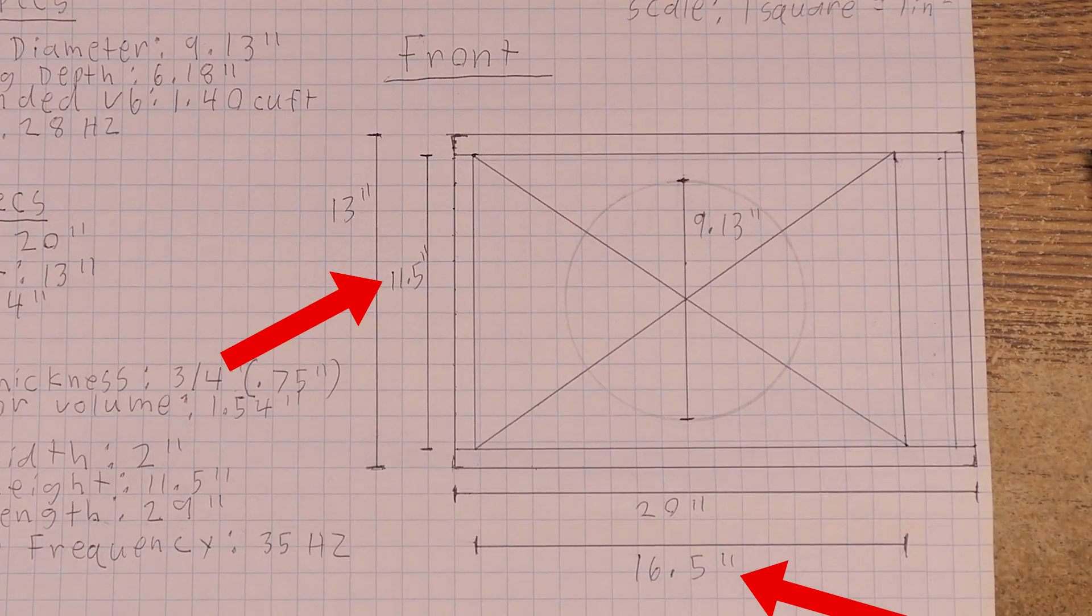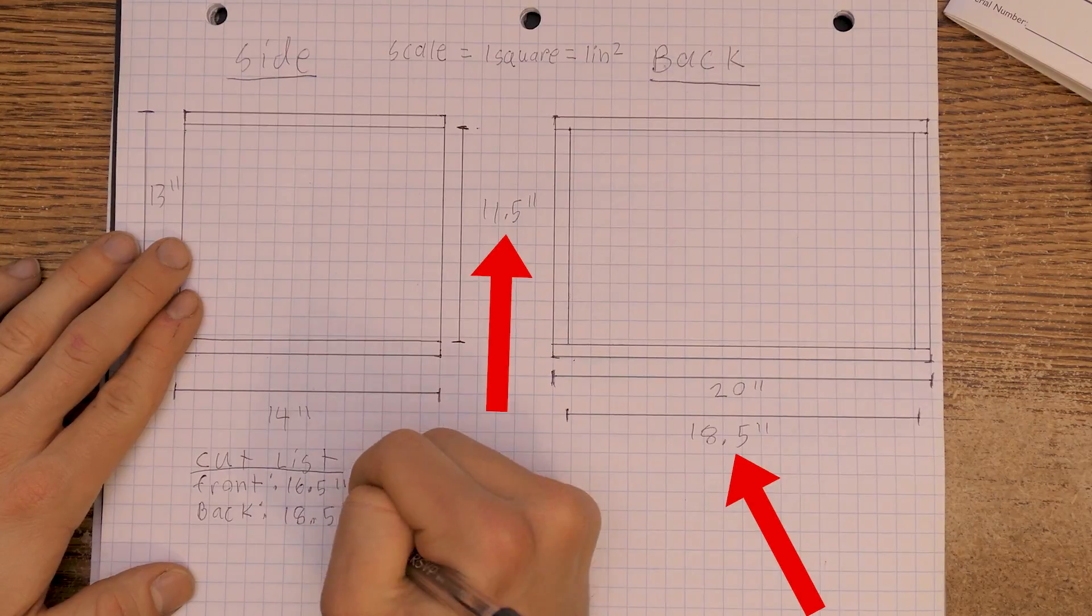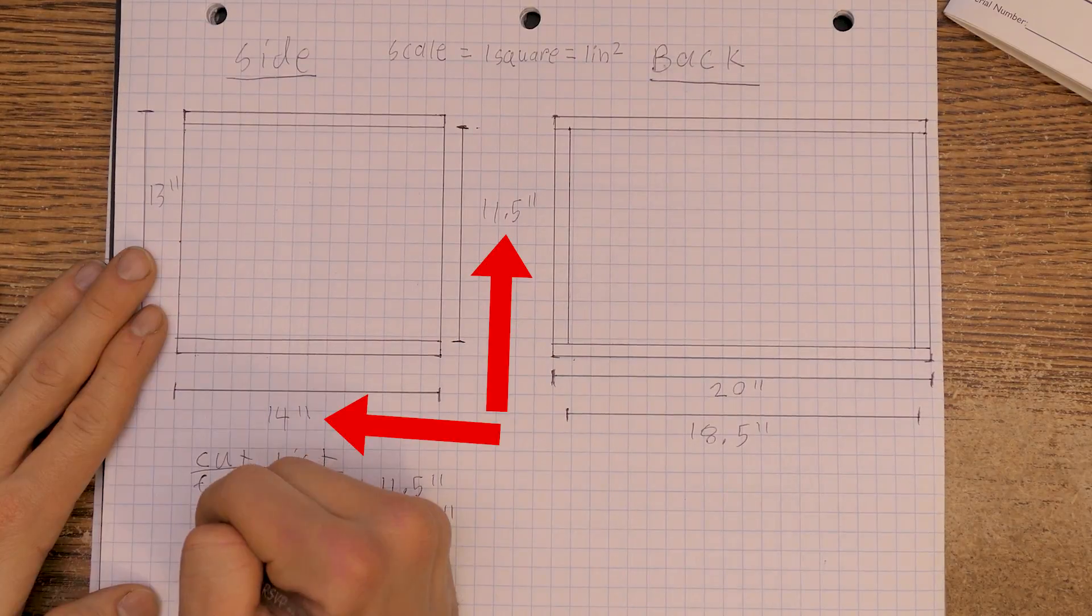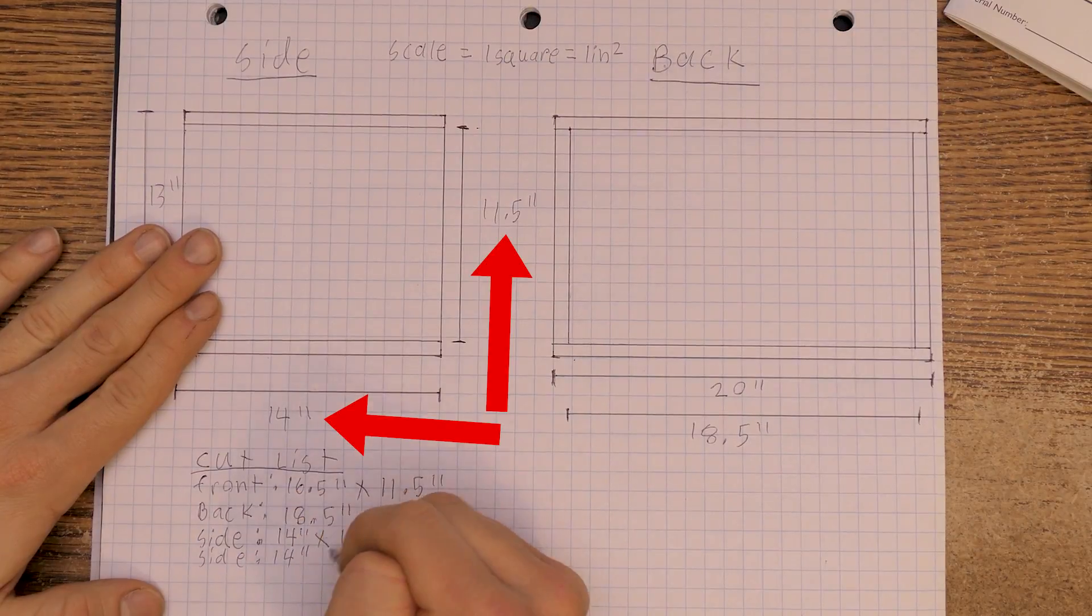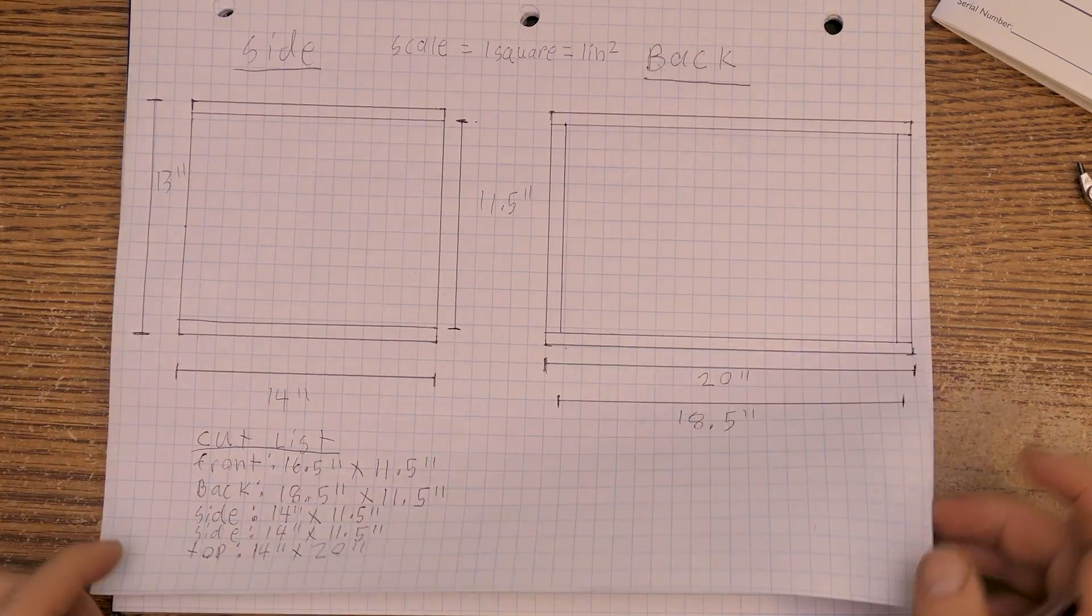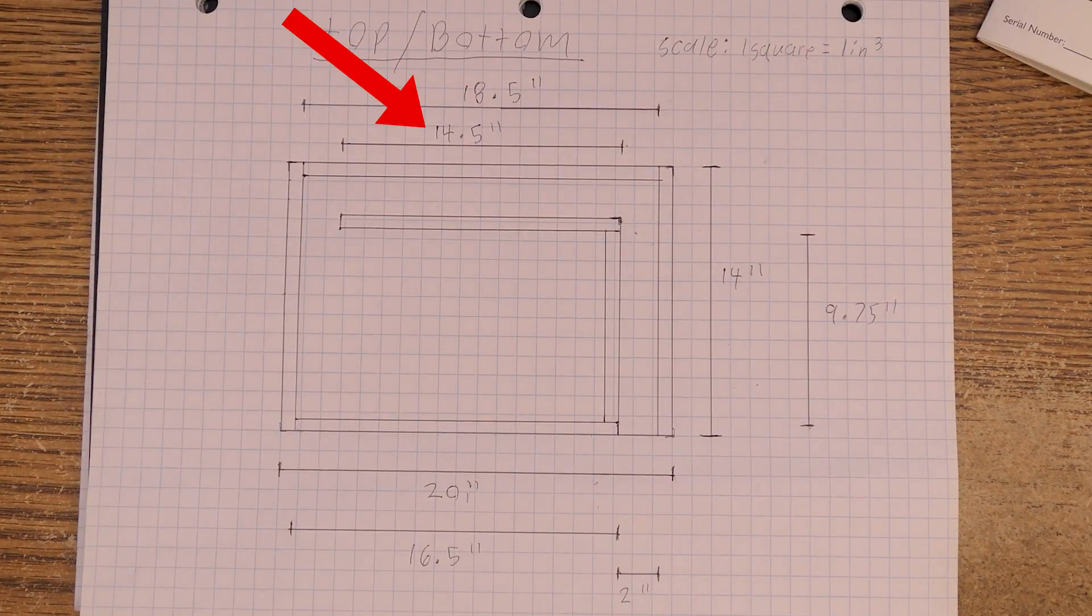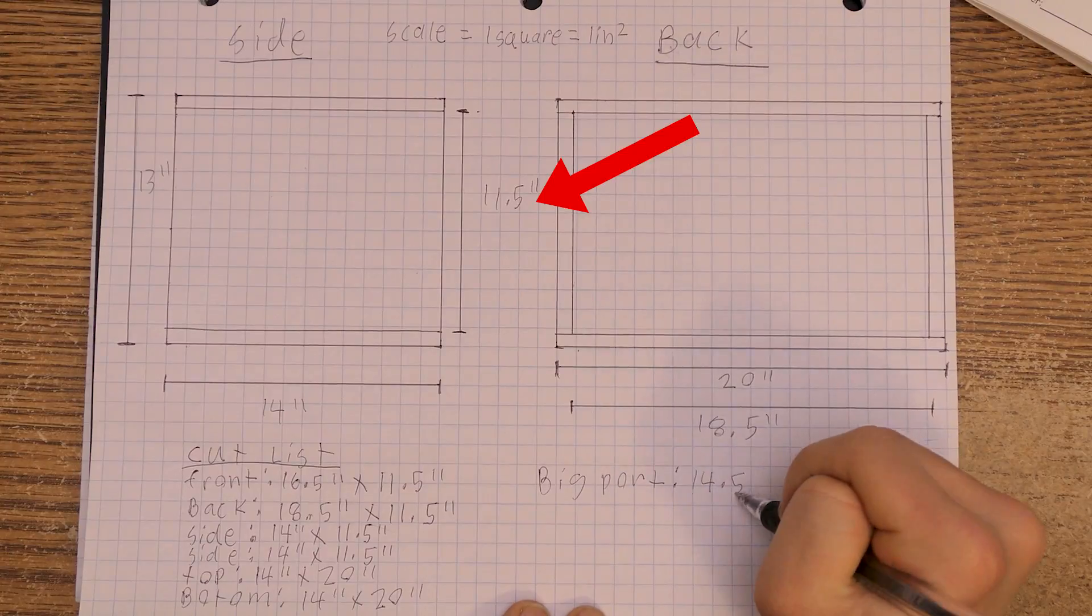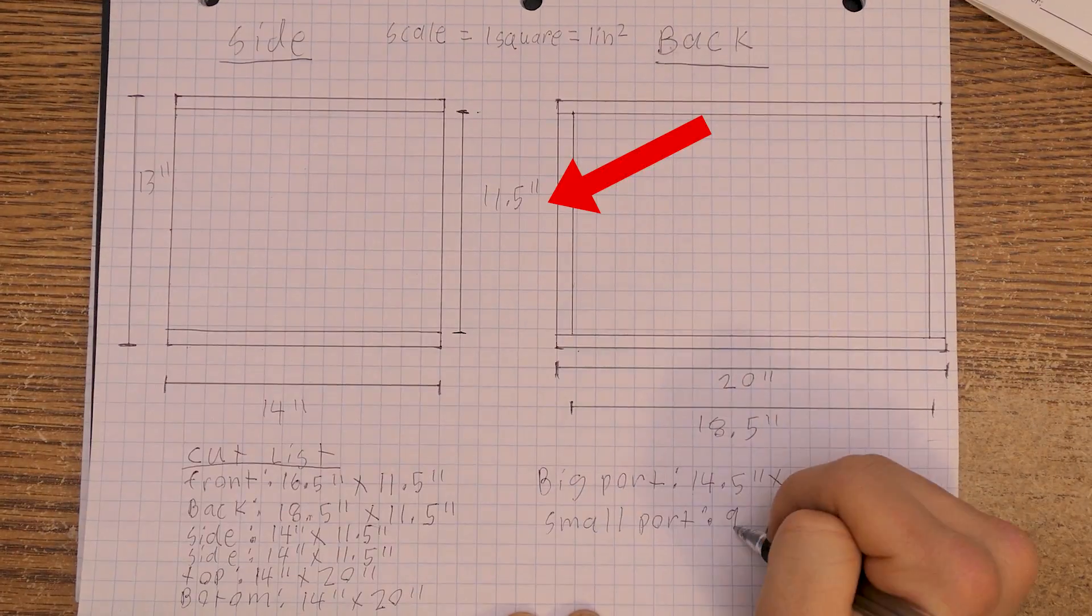The front will be 16.5 by 11.5 inches. Back is 18.5 by 11.5. A side is 14 by 11.5, and it'll be the same for the other side as well. The top and bottom will both be 14 by 20 since everything will be sandwiched between them. The big port wall is 14.5 by 11.5, and the small port is 9.75 by 11.5.